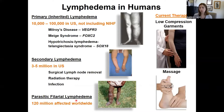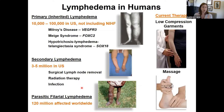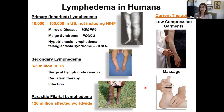Parasitic filarial lymphedema is a worldwide problem affecting 120 million people, caused by filarial parasites that live within lymphatic capillaries and create a physical obstruction to lymph flow. Remarkably, we have no pharmacological therapies or targets for lymphedema. The only treatment is daily wearing of compression garments and massage, with lymphatic clinics using deep tissue massage to physically push fluid back into lymphatic vessels.